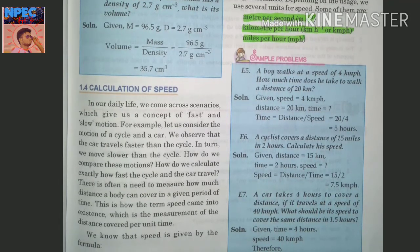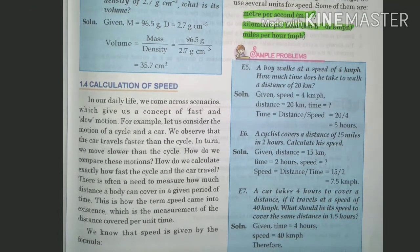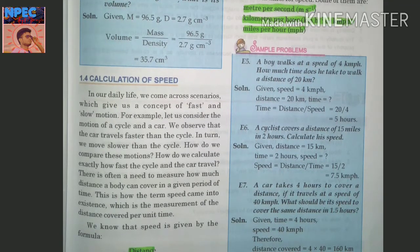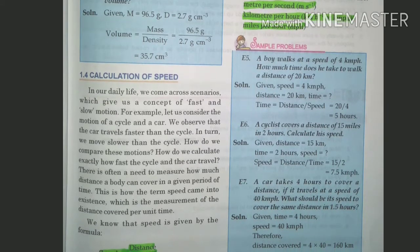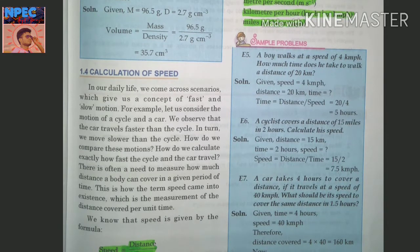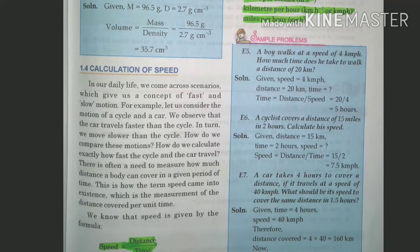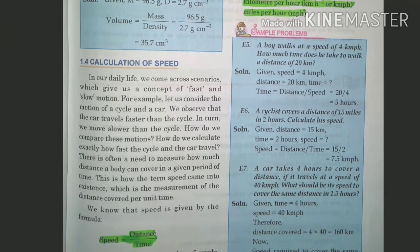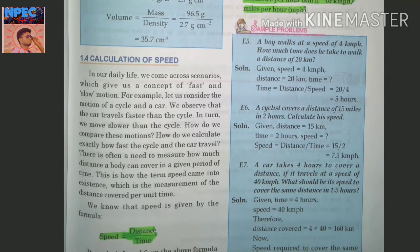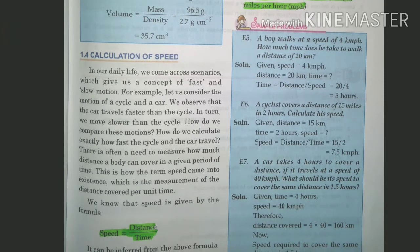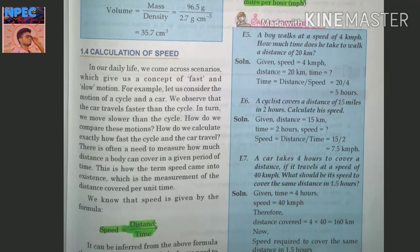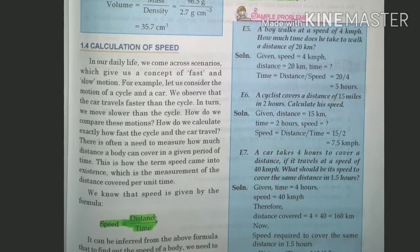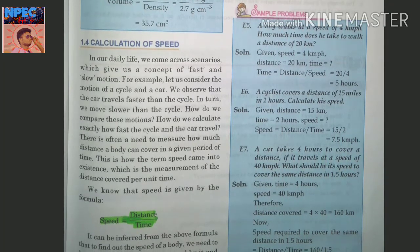There is often a need to measure how much distance a body can cover in a given period of time. This is how the term speed came into existence — speed is the measurement of distance covered per unit time, which is a physical quantity. Speed = Distance / Time.